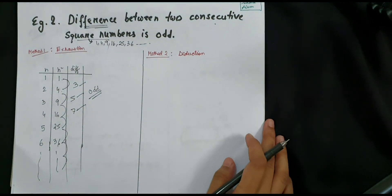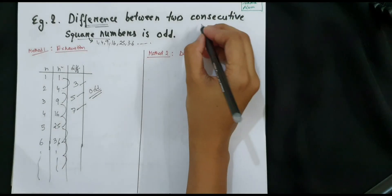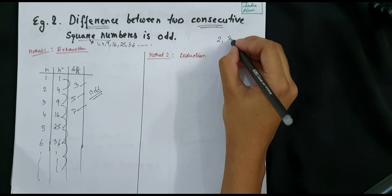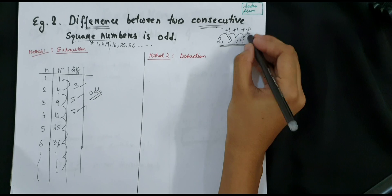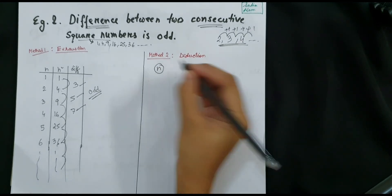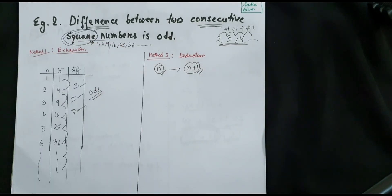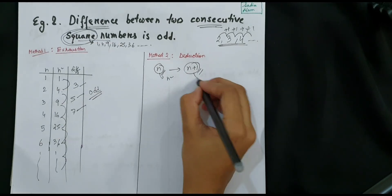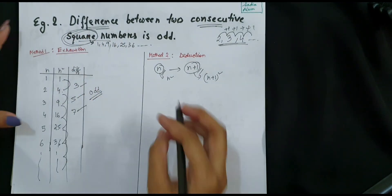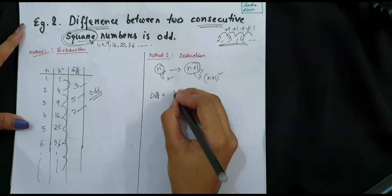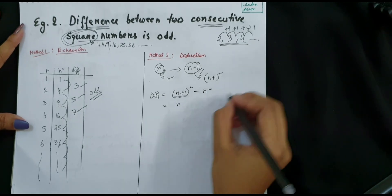In case of deduction we will not use any numerical values. We need to find consecutive square numbers, so if we take variable n, the next consecutive number is n plus 1. Since we need square numbers, we take n squared and (n plus 1) squared. The difference between two consecutive square numbers is (n plus 1) squared minus n squared. Expanding using the (a+b)² formula: n squared plus 2n plus 1 minus n squared, which gives 2n plus 1.